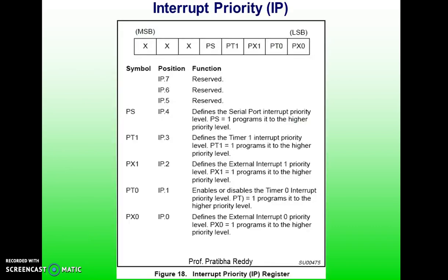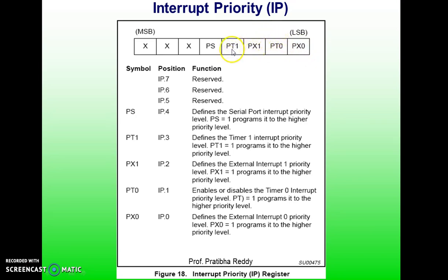Coming to the IP register — the interrupt priority register. As discussed, we have a total of five interrupts: two external interrupts, two timer interrupts, and one serial communication interrupt. The priority sequence is: External Interrupt 0 has the highest priority, followed by Timer Interrupt 0, then External Interrupt 1, then Timer Interrupt 1, and the lowest priority goes to the serial communication interrupt.